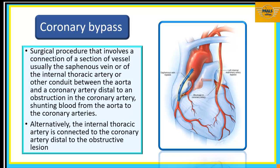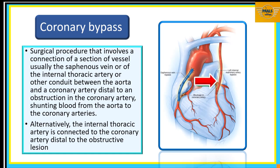Coronary bypass is a surgical procedure involving connection of a section of vessel — usually the saphenous vein or the internal thoracic artery or other conduit — between the aorta and a coronary artery distal to an obstruction, thereby shunting blood from the aorta to the coronary arteries. We see saphenous vein bypass and left internal mammary artery bypass in the images — a blockade is bypassed by a shunt avoiding the blocked segment.